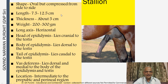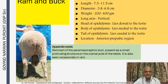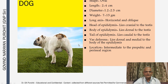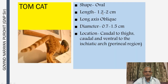In the stallion, the testes are oval but compressed from side to side and lie horizontally. In the ram and buck, testes lie vertically similar to the bull; the appendix testes is a remnant of the paramesonephric duct, present as a small protruding structure on the cranial pole and occasionally seen in the ram. In the boar, the testes are located behind the thighs, oval, caudal and ventral to the ischiatic arch. In the dog, testes are horizontal and oblique with the body of the epididymis lying dorsal. In the tomcat, testes are oval with the long axis oblique, located cranial to the thighs.